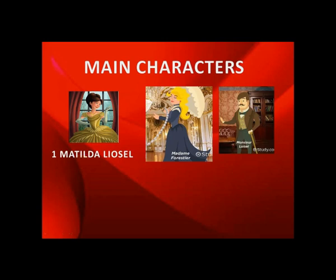The story begins with the family background of Matilda. The narrator says that Matilda belonged to a poor section of society — her family was from the middle class and did not have many resources at their disposal. Because they could not arrange a big dowry for their daughter, they married her off to a local clerk living in Paris named Monsieur Loisel.